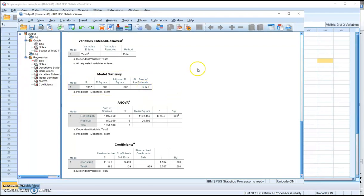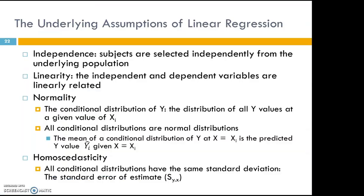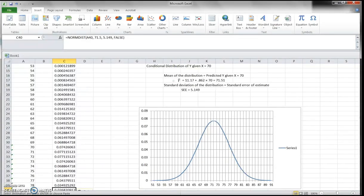So here comes the last assumption of our regression analysis — it's called homoscedasticity. Homoscedasticity says all conditional distributions have the same standard deviation, which is the standard error of estimate. Let me use an example to make things easier to understand.